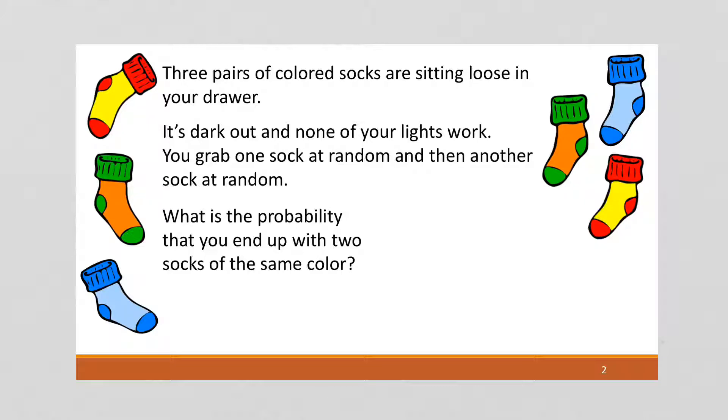Now, the way I like to think about this is you choose the first one randomly. And it could be of any of those three pairs. Then you want to look at the remaining socks left, and see how many of them there are, and how many would match our sock. And from that, you can come up with a probability. So let's write that out.